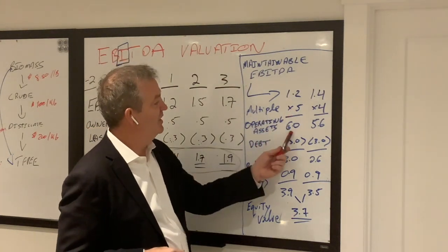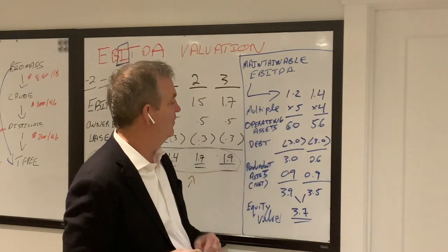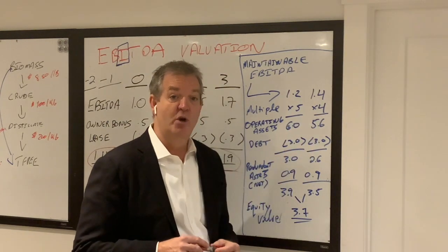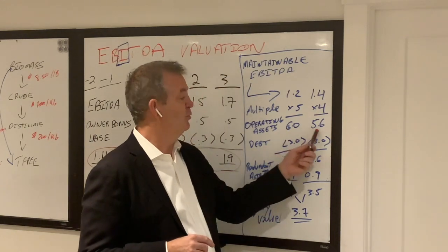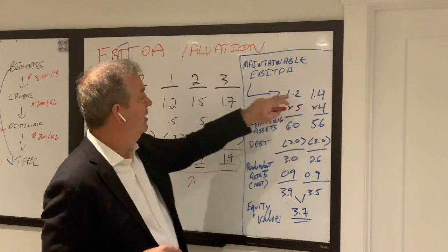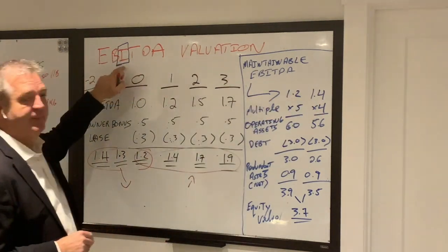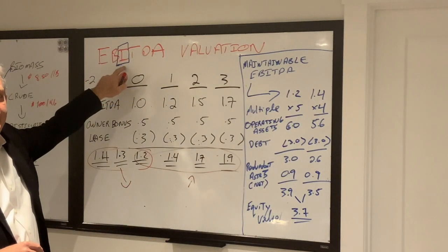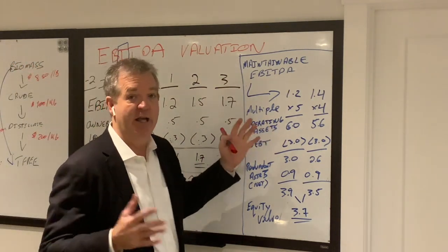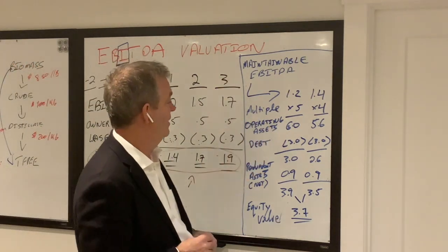1.2 times 5 is 6 million. 1.4 times 4 is 5.6 million. What am I valuing? Is that the value of the shares? No. It's the value of your operating assets. How do I know that? Because I'm using an EBITDA number and EBITDA is before interest. Interest is the cost of your debt. So you haven't, I haven't accounted for that yet. I have not accounted for the cost of my debt.